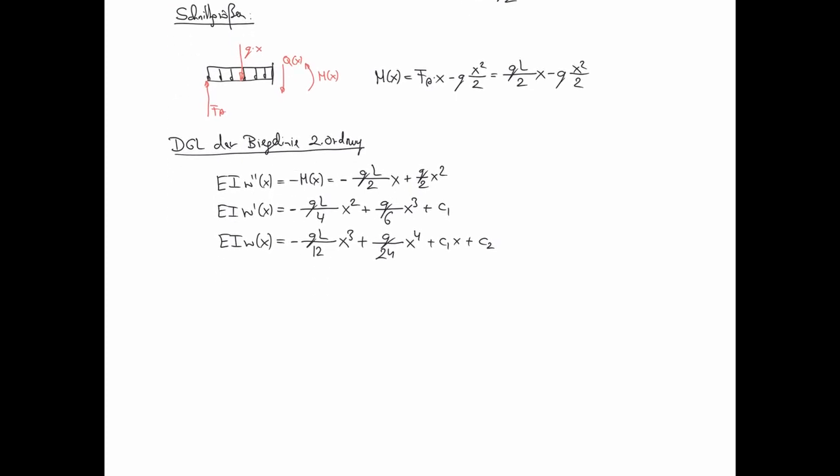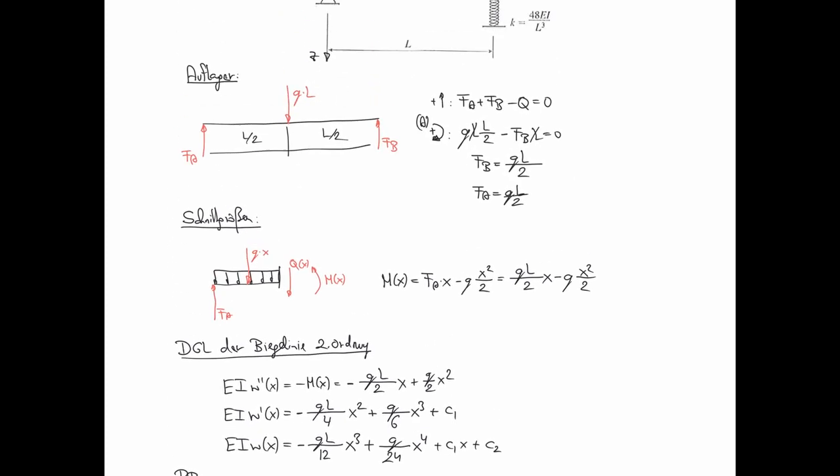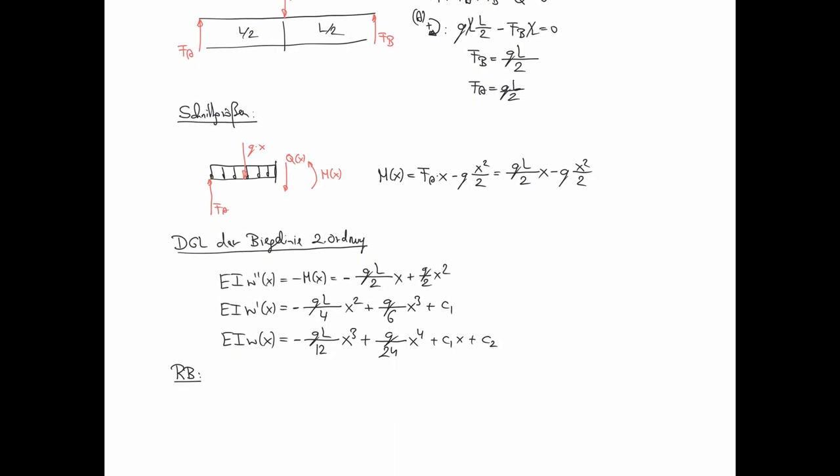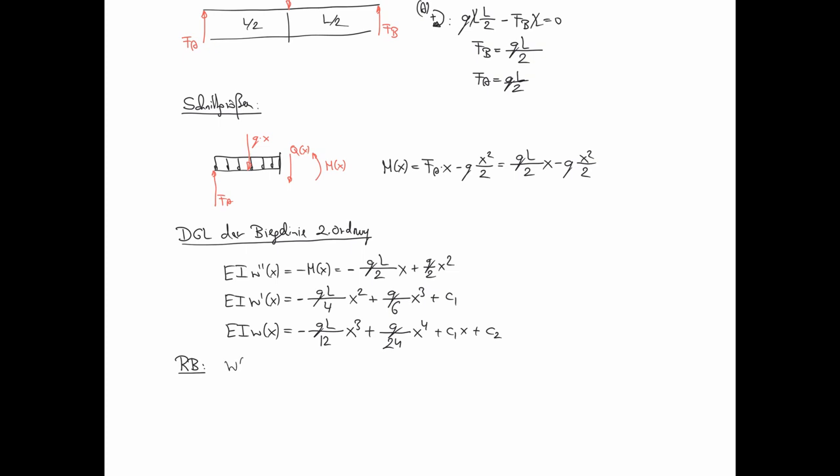Und jetzt kommt der Schritt, nämlich Randbedingungen. An der Stelle 0, also hier im Lager A ist wiederum Absenkung 0. Das ist klar. Schreiben wir mal hin: W von 0 ist 0. W von 0 ist 0 liefert C2 ist 0. Wie vorher besprochen. Startet bei 0.